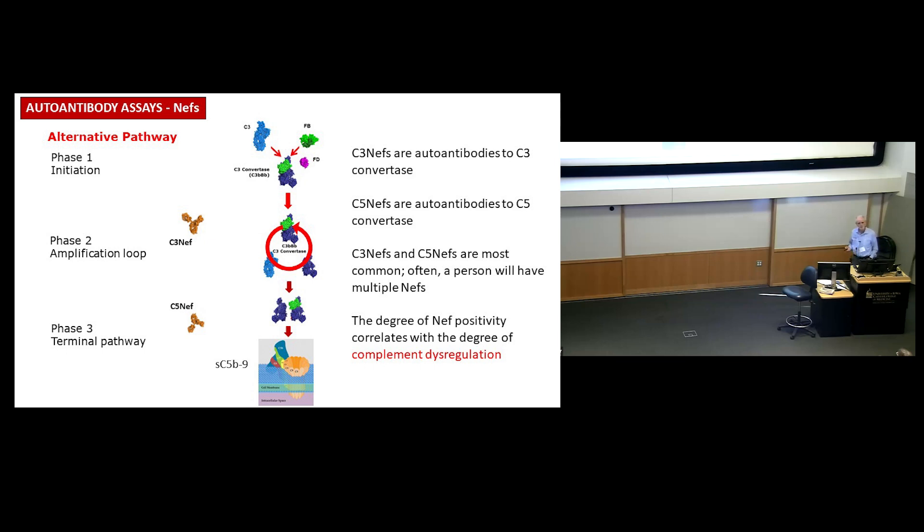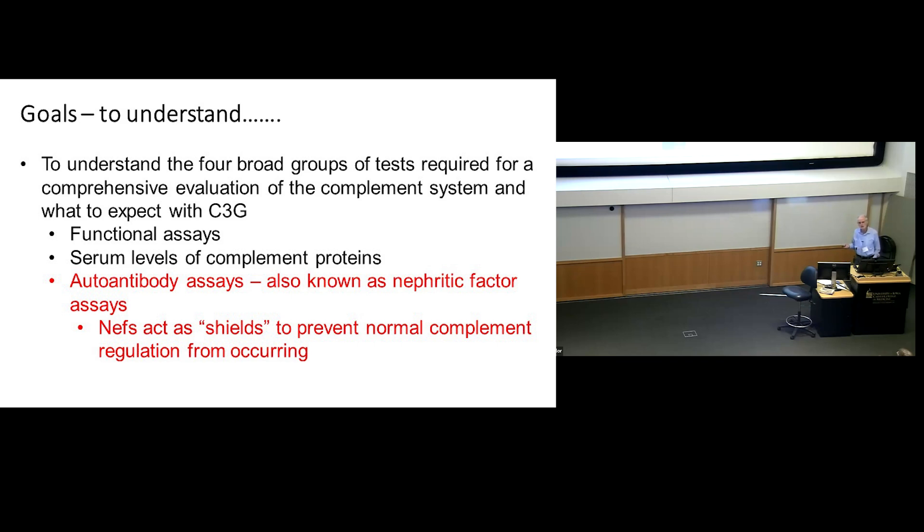There's also C5 nephritic factors. Some people will be, in fact many people are, co-positive for both. We look for your nephritic factors and see how robust they are. Our data suggests that if your nephritic factors are really robust, really powerful, that's associated with lower levels of C3, and that's associated with a lower prognosis. You're more likely to go into renal failure quicker. We typically say about 50% of people go into renal failure in 10 years. We're trying to get better so we can say which 50% do you fall in? Part of that is understanding what nephritic factors do. Nephritic factors act as shields to prevent normal complement regulation from occurring.